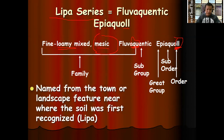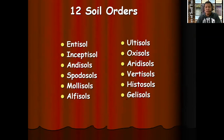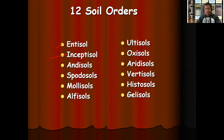The Lipa series was named from the town or landscape features near where the soil was first recognized. Based on the different diagnostic features, whether in the surface horizon (epipedon) or in the diagnostic subsurface horizon, we have different soil orders. We have entisols — young soils — inceptisols, andisols which are volcanic soils, spodosols with spodic diagnostic subsurface horizons, mollisols which have a mollic epipedon in the A horizon, and alfisols which are forested soils.